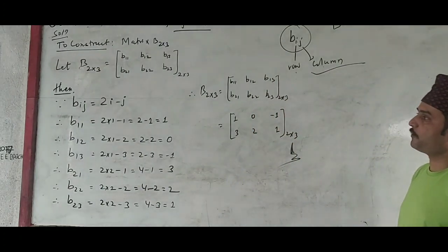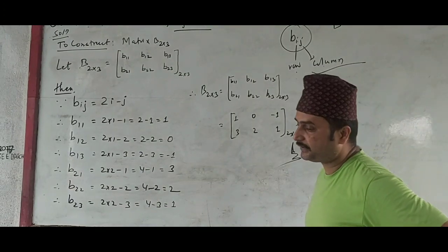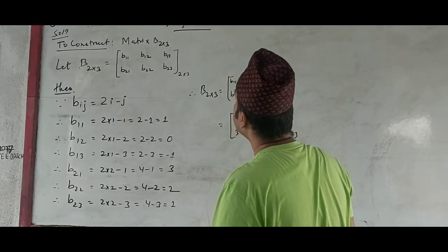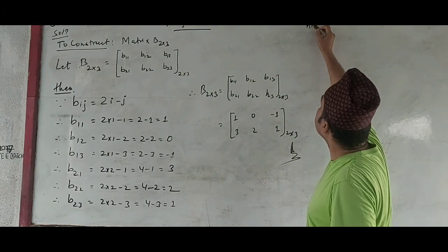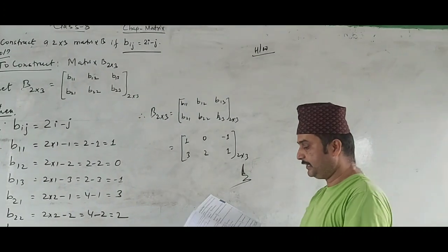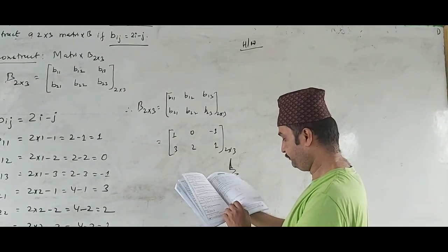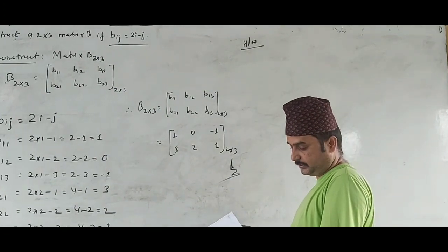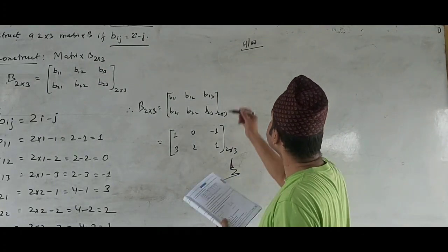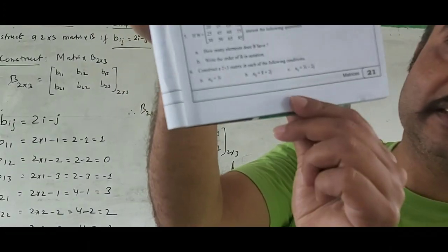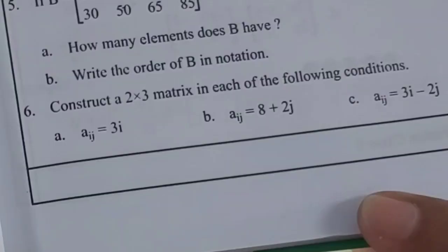Now let's put the values into the matrix. Therefore matrix B of 2 by 3 is: B11=1, B12=0, B13=−1 in the first row; B21=3, B22=2, B23=1 in the second row. This is the required matrix. For your home assignment, see question number 6 from your book.